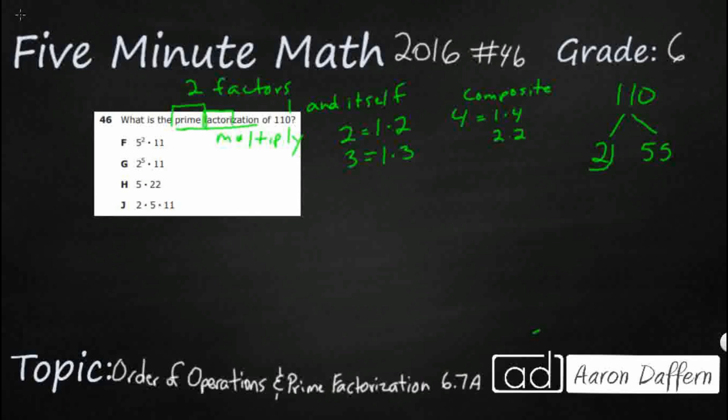Now what we do is we circle any prime numbers. That means we're done. That's why we call it a Christmas tree because they look like ornaments. So two is done, but 55 is not done yet because it ends with a five, so it can be divided by five. So let's think five times 11.